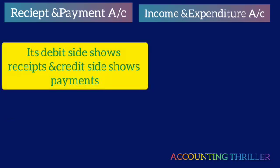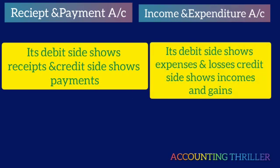In a Receipt and Payment Account, the Debit side shows Receipts and the Credit side shows Payments. In an Income and Expenditure Account, the Debit side shows Expenses and Losses, while the Credit side shows Incomes and Gains.